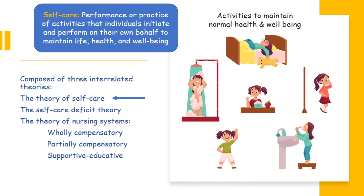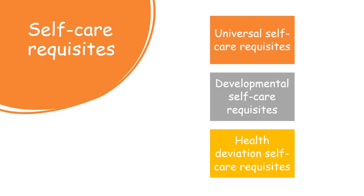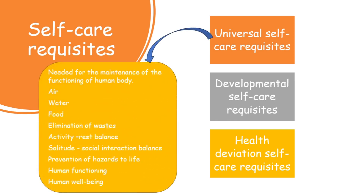There are three kinds of self-care requisites: universal, developmental, and health deviation. Universal self-care requisites are requirements needed for maintenance of the functioning of the human body, such as maintenance of sufficient intake of air, water, and food; care associated with elimination of wastes from the body; maintenance of a balance between activity and rest; balance between solitude and social interaction; and prevention of hazards to life and human well-being.